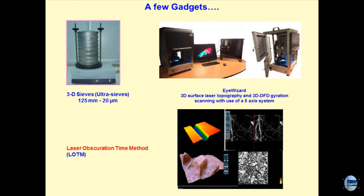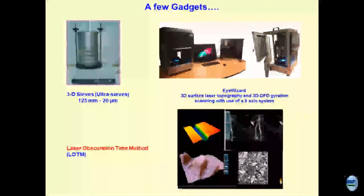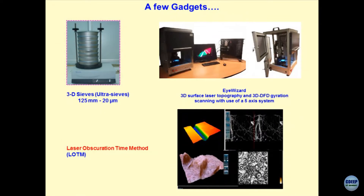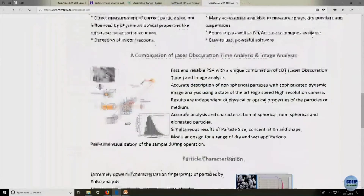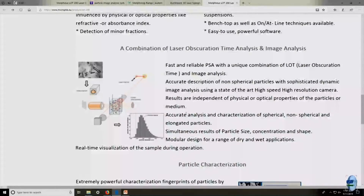Another device is LOTM — Laser Obscuration Time Method — used by our research group with published papers. It maps the entire particle as it falls in a water column. In hydrometer analysis, you are only talking about the macro aspect of a particle falling in a water column, but with LOTM, the surface from all sides and features of the particles can be captured very easily.